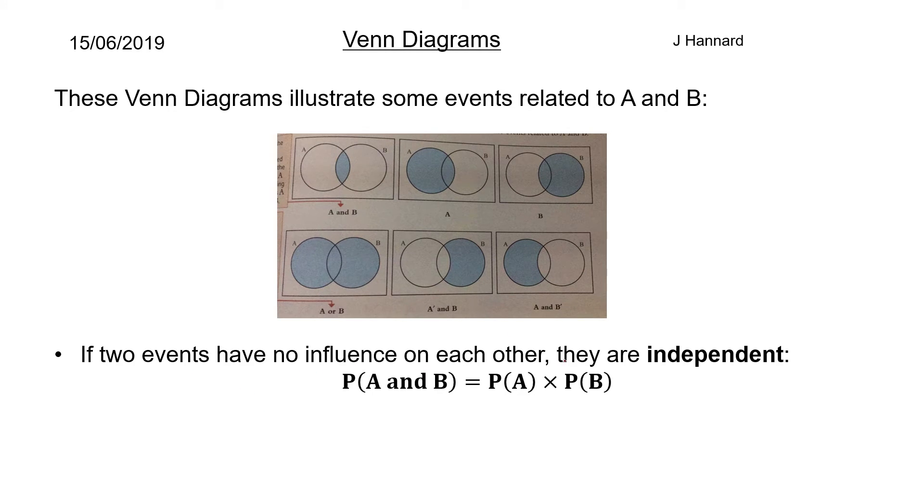So if two events have no influence on each other they are independent. So the probability of A and B is equal to the P of A times the P of B. That is just a rule that you have to know. So that means the intersection is equal to the product of A and B.